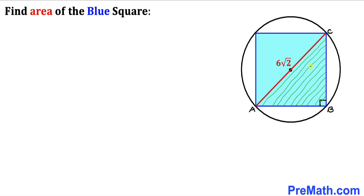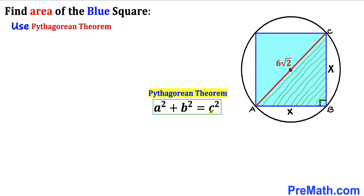This angle is 90 degrees since we are dealing with a square. If this side length is x, this side length is going to be x as well. Triangle ABC is a right triangle, so we are going to use the Pythagorean theorem: a² + b² = c². In our case, a is x and b is x as well, so this becomes x² + x² = (6√2)².